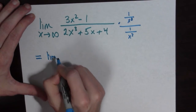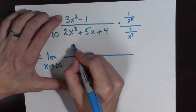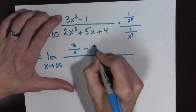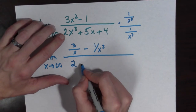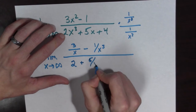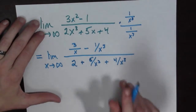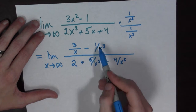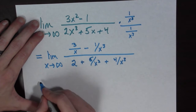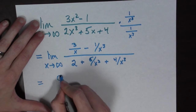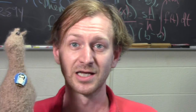This is equal to the limit as x goes to infinity. In the numerator we have 3 over x minus 1 over x cubed. And in the denominator, we have 2 plus 5 over x squared plus 4 over x cubed. As x goes to infinity, this term goes to 0, this term goes to 0, this is 2, this goes to 0. So this is going to be equal to 0 over 2, which is simply 0. Done!